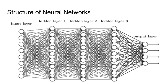So the structure of neural networks can be complicated or it can be very simple. Every neural network starts with an input layer and ends with an output layer. Then in between those layers, there are a certain number of hidden layers.